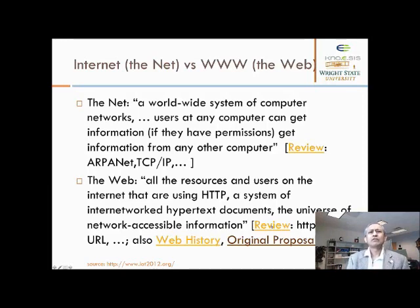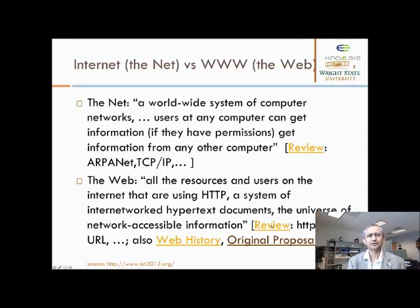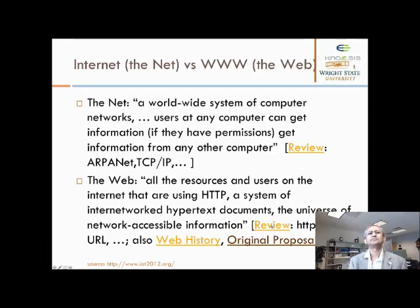There are two key parts: all resources and users on the Internet that are using HTTP form a system of Internet-wide hypertext documents. HTTP allowed for the connection, and what got displayed and presented to the user is this hypertext document. Now that you could present documents coming from any server on any computer on the so-called World Wide Web, this basically made for what is termed a universe of network-accessible information.